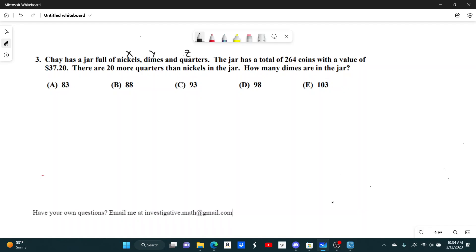If the jar has a total of 264 coins, then x plus y plus z equals 264.